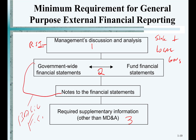If you pick up the financial reports of a city like Hayward, you would see the GASB reporting model. GASB requires that every state, county, and city provide this basic financial reporting model. The first thing you see is a Management Discussion and Analysis — the MD&A. The second thing you see are the basic financial statements.